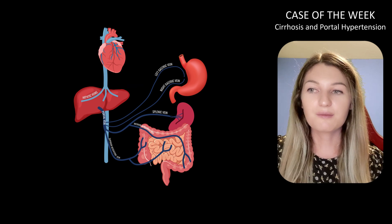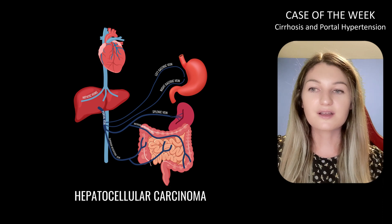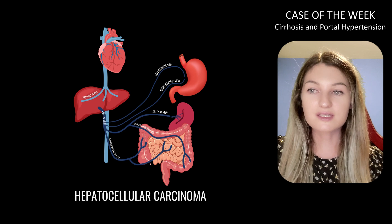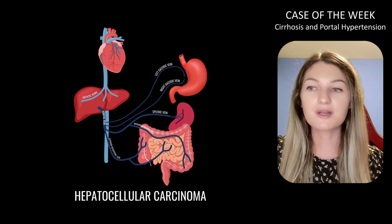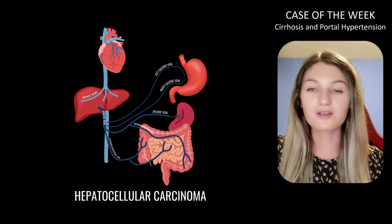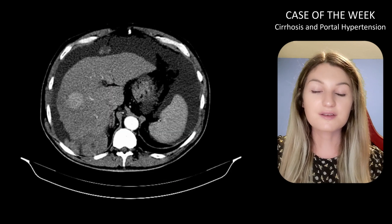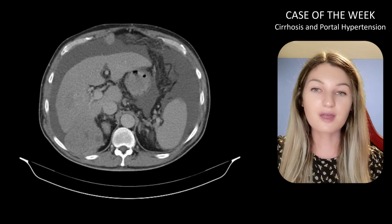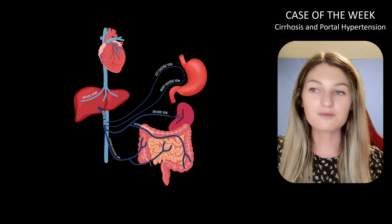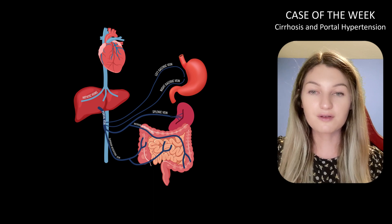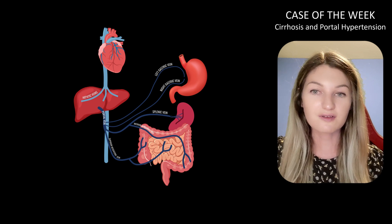Finally, I want to mention hepatocellular carcinoma. This is not directly a result of portal hypertension, but since cirrhosis is the leading cause of HCC, always keep it in mind when doing your search pattern in a patient with cirrhosis regardless of the etiology. The classic appearance of HCC is avid arterial phase enhancement with washout and a pseudo-capsule on delayed imaging. However, remember that nothing wants to live in a cirrhotic liver, so think twice before assigning a benign etiology to any suspicious liver lesion.